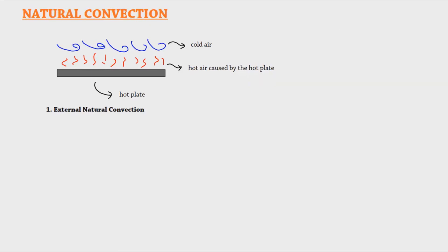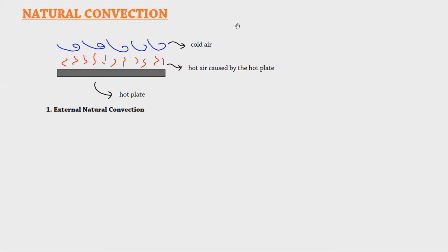Now let's move on to the next type of convection, which is natural or free convection. To explain natural convection, here is a figure of a plate that is hot, with hot air caused by that hot plate. Imagine a bulk of air being heated by the plate, then cold air outside mixes through bulk mixing with the hot air — that natural phenomenon is called natural convection or free convection, usually caused by exposure of a material to a temperature gradient and density differences.